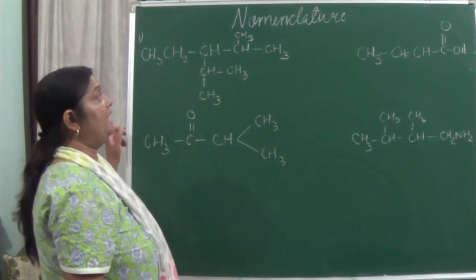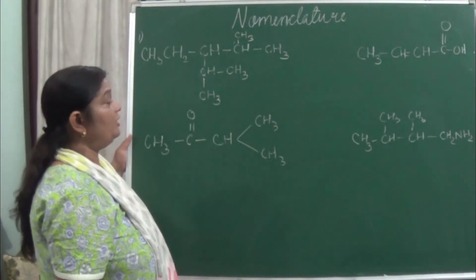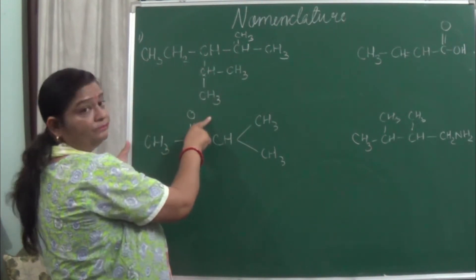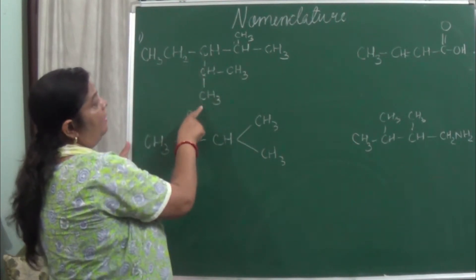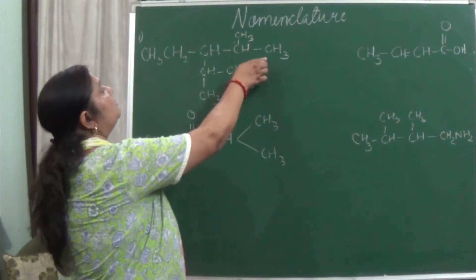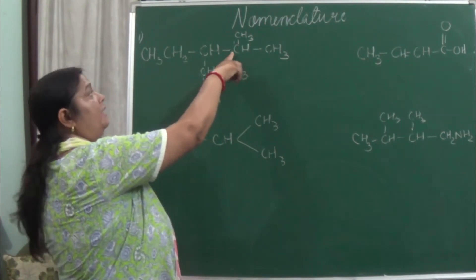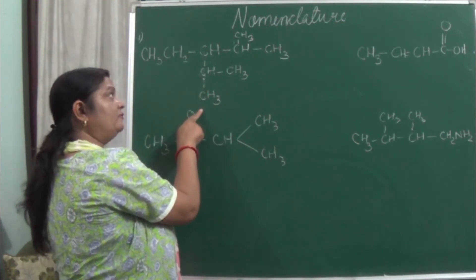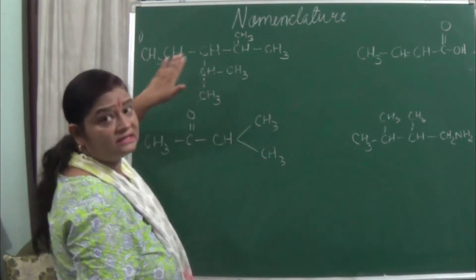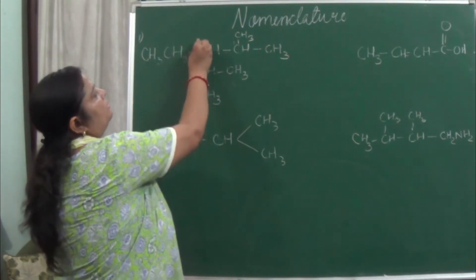You have to see in which direction the branching has started earlier, or where the maximum number of substituents are. If you take from one side the branching comes at the third position, and secondary branching is also there — making it complex. If you name from another direction, counting gives 6, and branching starts at the second position. Taking from the other side also gives second and fourth positions.